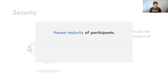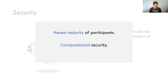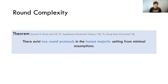So what's the setting we are considering? We want an honest majority of participants, and we are working in the computational security setting, meaning that any protocol talked about in this talk is going to assume at the basis existence of one-way functions. In this honest majority setting with computational security, what do we know about the round complexity? It's actually well studied and well understood, following from a really cool recent line of work which shows that in the honest majority setting, there exist two-round protocols, under the minimal assumption of one-way functions.